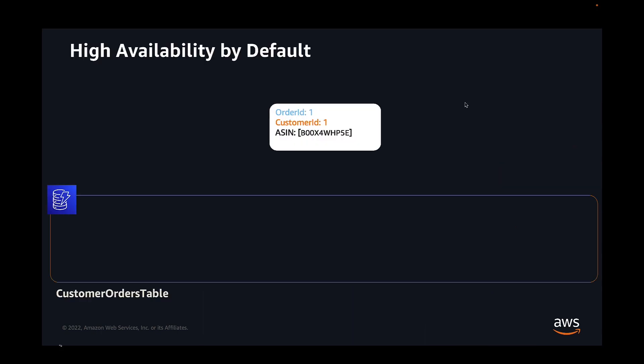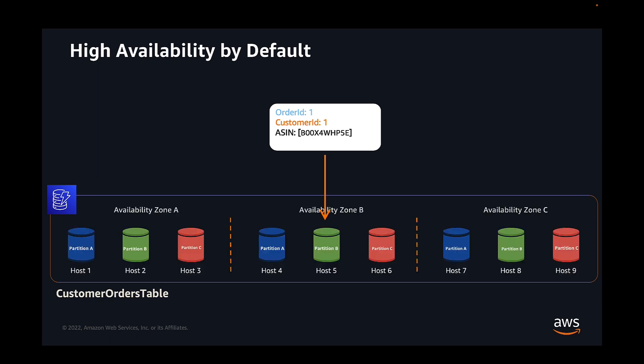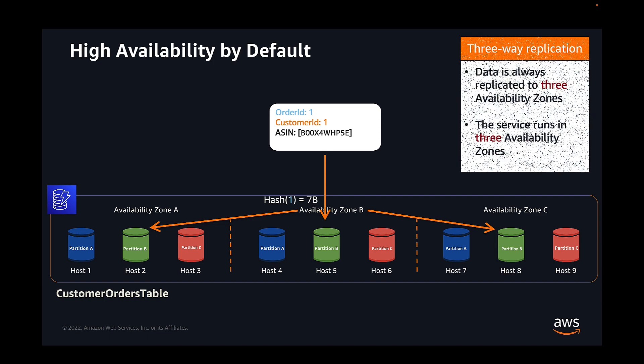When writing an item to a table, it uses the value of the partition key as an input to its internal hash function. The output value from this hash function determines which partition the item should be stored in. The write is then processed by the leader of that partition, and then asynchronously replicated to its followers in different AZs. DynamoDB uses three AZs, running a highly available and highly durable service.